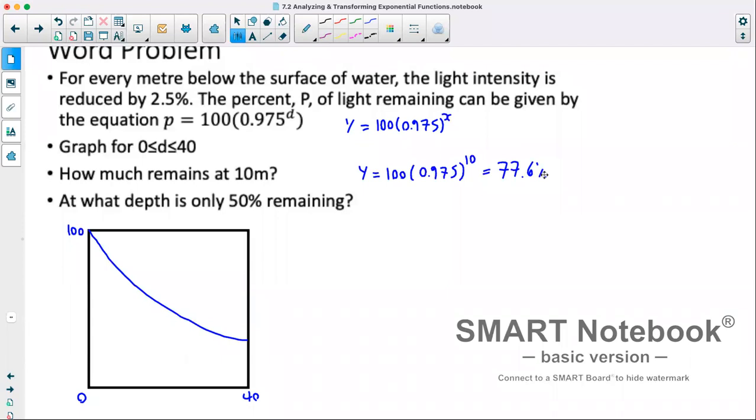Now at what depth is only 50% remaining? What we'll do is we'll add another graph to our existing one. So we'll just create the graph y is equal to 50. What this will do is it will plot a horizontal line at a y value of 50. We then will use our calculator functions to find where these two lines intersect. And we're given this coordinate is 27.4, 50. So our answer for this would be 27.4 meters where 50% of light is remaining.